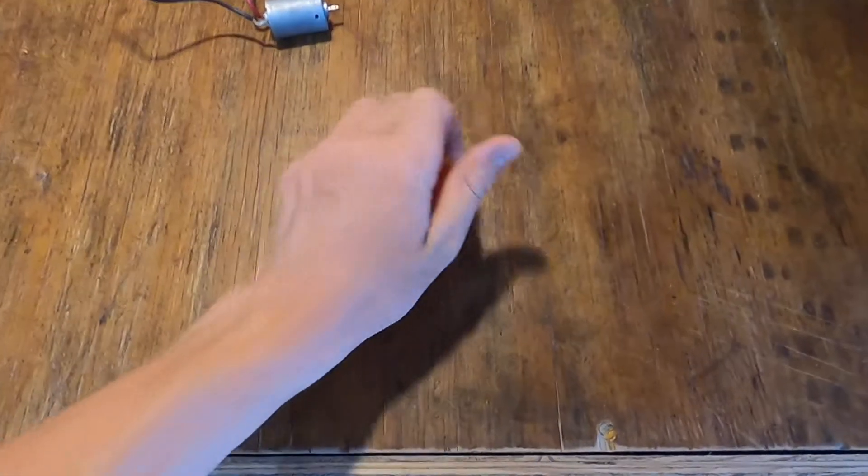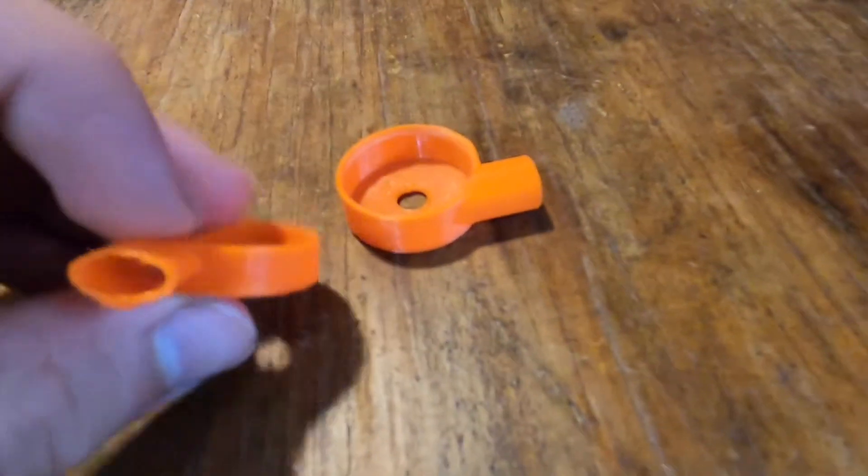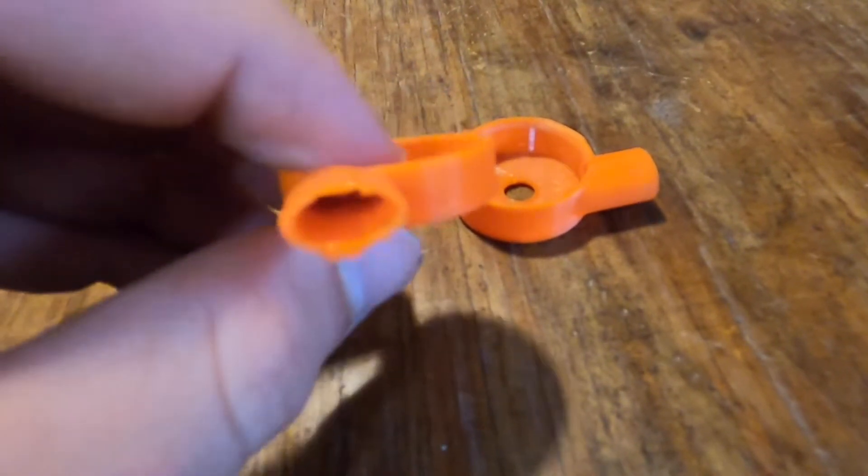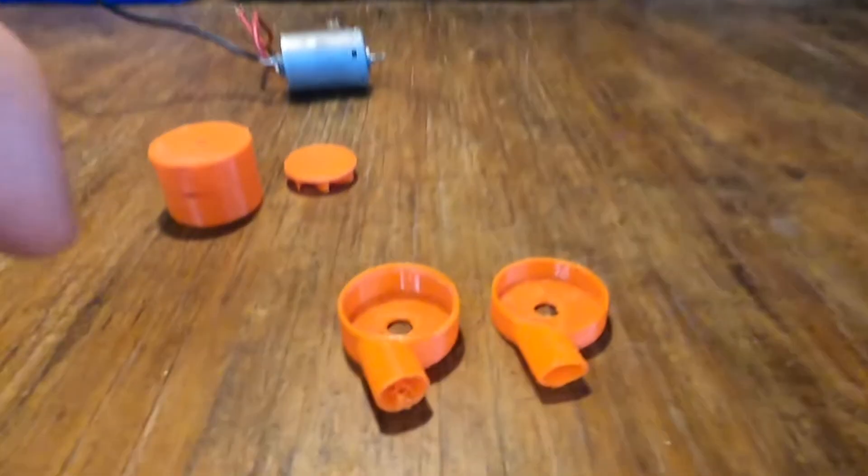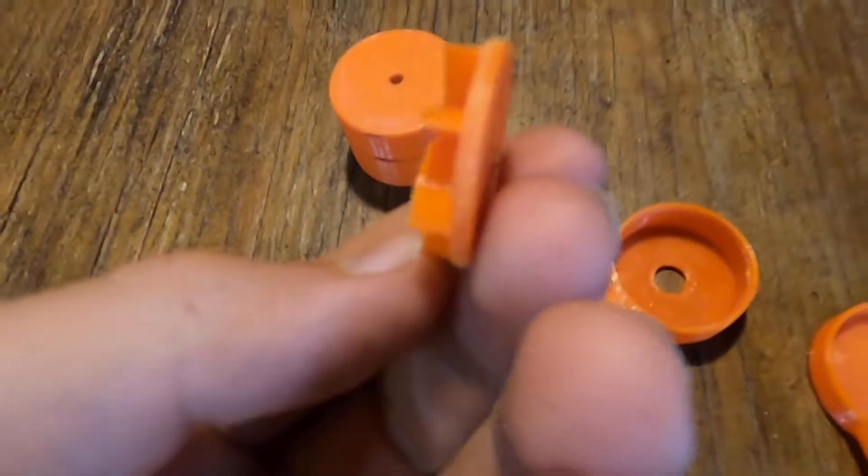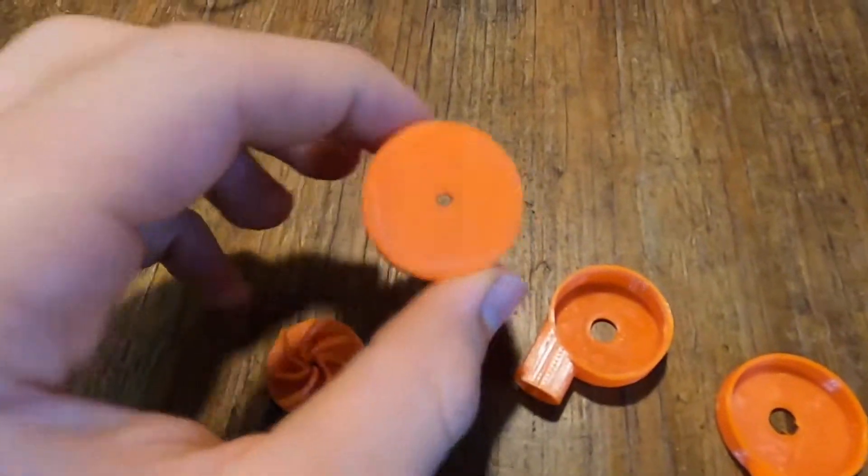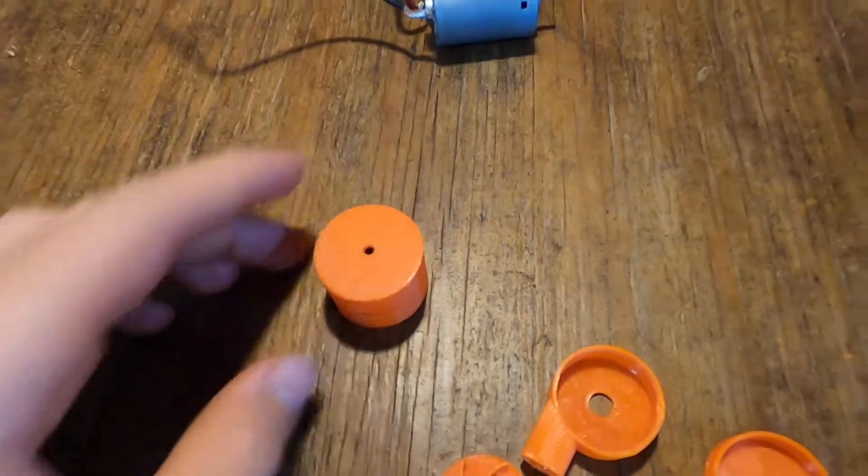All right, so all the parts are done 3D printing. Took a couple tries to make the outer housing. The first one as you can see is really thin and frail, so I reprinted this one. And then we have this little impeller here which goes on the motor, and then this goes around the motor. We're going to glue them together and see what happens.